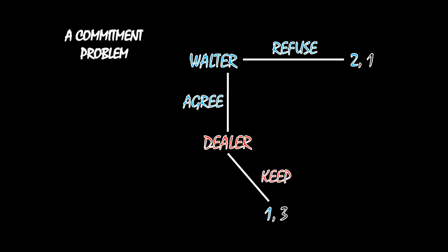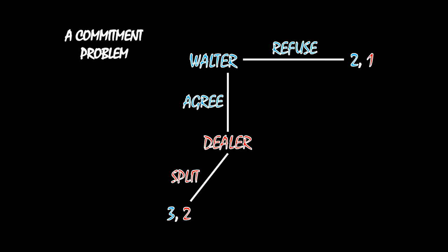Now I want to note something. The outcome of this game is for Walt to refuse, and the dealer not to make a decision. But this is actually a bad outcome for both parties. Compare that to the outcome where Walt agrees to the deal and the dealer actually upholds the deal and splits the money with Walter — Walt receives a three in that outcome, his best outcome, better than his second best of refusing. And notice the dealer is also better off: he's not getting as much money as if he kept all of it, but splitting is still better than making no money if Walt refuses to go in on the deal.